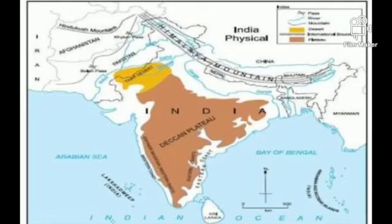Now look at the map. The following regions are important when we look at the course of Indian history: first, the Himalayas; second, the plains of the Sindhu, Ganga, and Brahmaputra rivers; third, the Thar Desert; fourth, the Deccan Plateau; fifth, the coastal regions; and sixth, the islands in the sea.